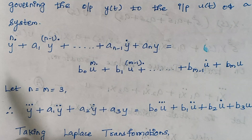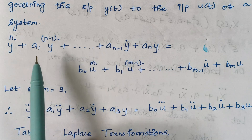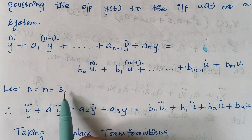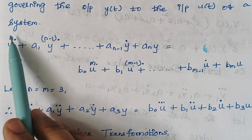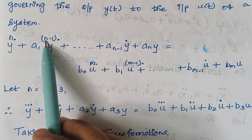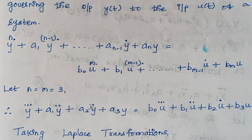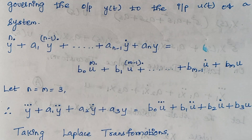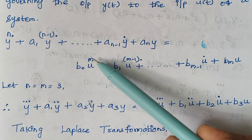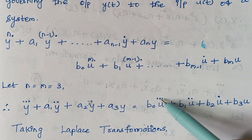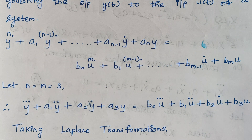The dot notation represents the differentiated form of y. Since n is 3, y is differentiated thrice. Substituting n equal to 3, n minus 1 is 2, so y is differentiated twice. Likewise, we frame an expression for the y terms. Similarly for the u term: with m equal to 3, u is differentiated thrice, and m minus 1 is 2, so u is differentiated twice.